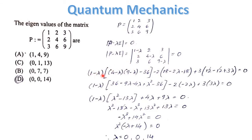Expanding: (1−λ)[(4−λ)(9−λ) − 36] − 2[2(9−λ) − 18] + 3[12 − 12 + 3λ] = 0. Since 18−18 cancels, this simplifies to (1−λ)(λ²−13λ) − 2(−2λ) + 3(3λ) = 0.